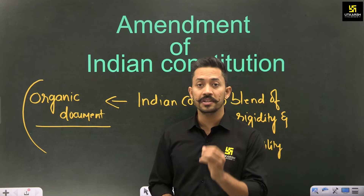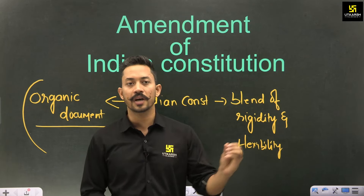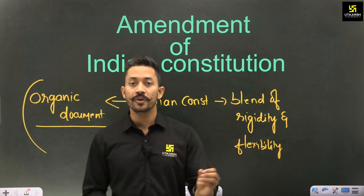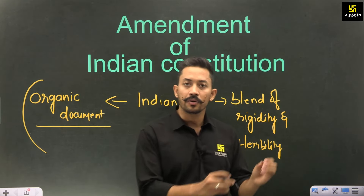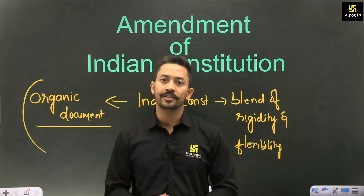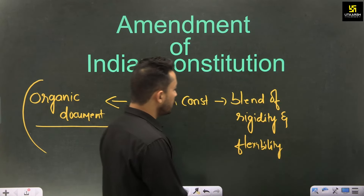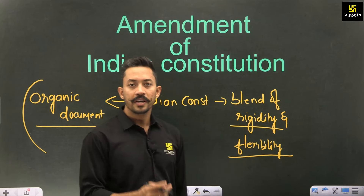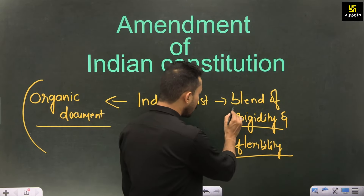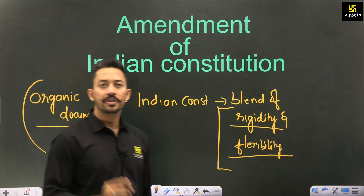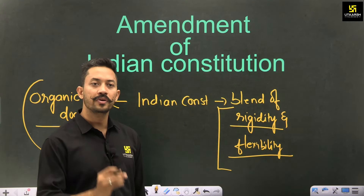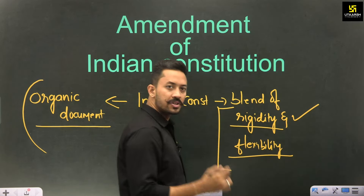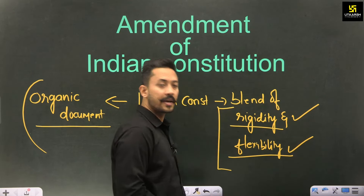There should be scope and space to bring changes — that is, amendments — in the constitution, because if you are not able to bring changes, the constitution will become redundant over time. The constitutional framers of India were very ingenuous people. They kept this in mind and designed the Indian constitution so that some provisions are very difficult to change and some are relatively easier.